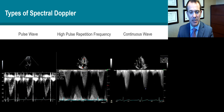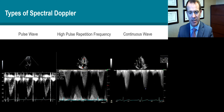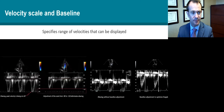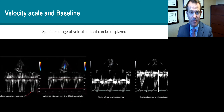The continuous wave Doppler is really useful for measuring high velocities. The limitation with continuous wave Doppler is that there is range ambiguity. So when we're talking about pulse wave Doppler, one of the issues, as we said, is that it can't measure very high velocities.